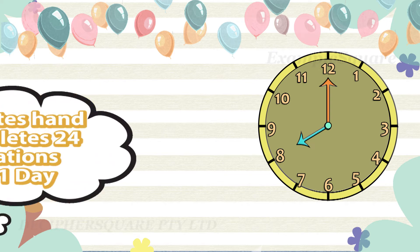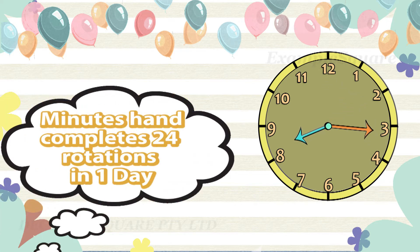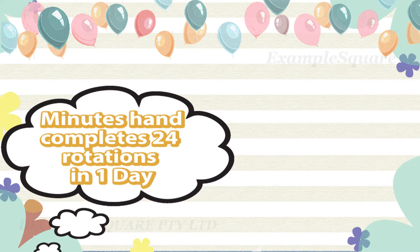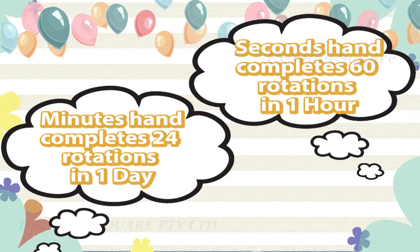The minute hand of an analog clock completes one full rotation in 60 minutes, meaning in one day the minute hand completes 24 rotations. The seconds hand completes one rotation every minute, so in just one hour the seconds hand completes 60 full rotations.